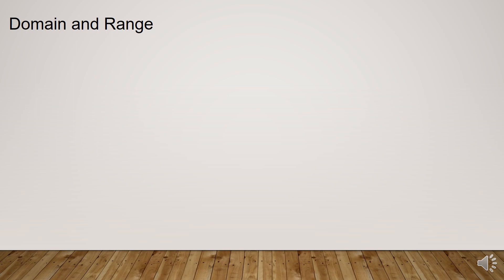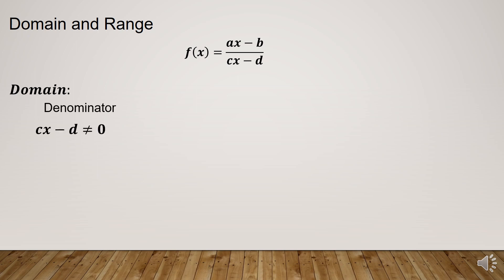Let us now find the domain and range of a given rational function. If the rational function is in the form f(x) = (ax - b) / (cx - d), both numerator and denominator are linear functions. To find the domain, we need to check the denominator. The denominator must not be equal to 0. So we find the restriction of x: cx is not equal to d, then divide both sides by c. Therefore, x must not equal d over c.